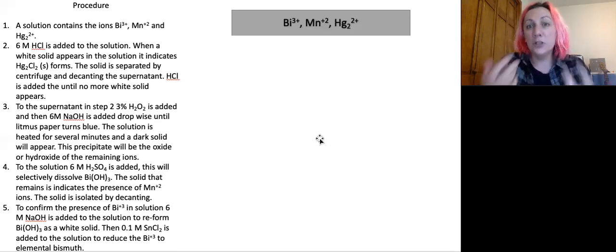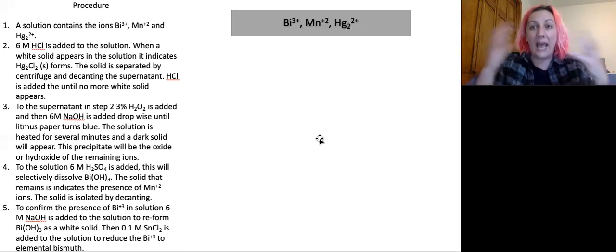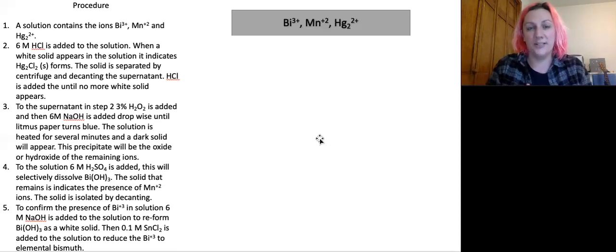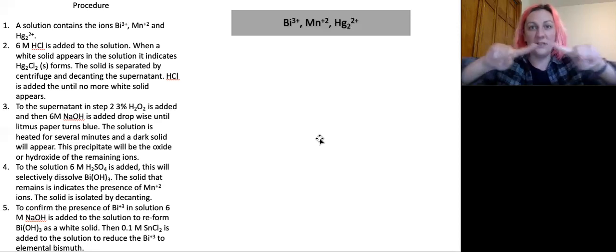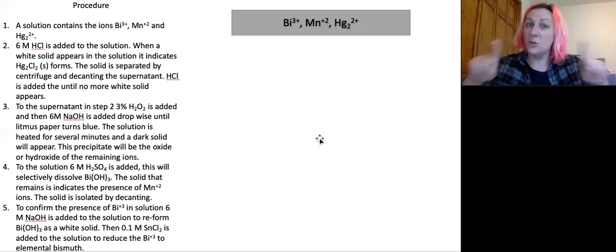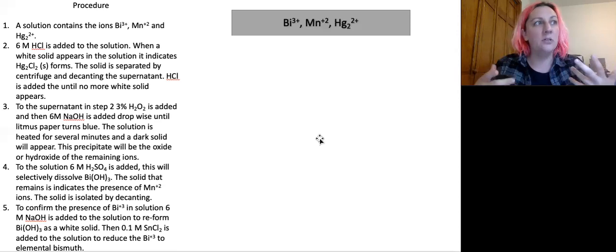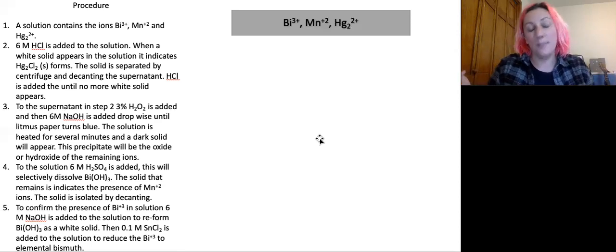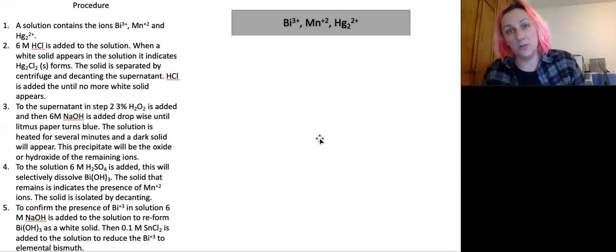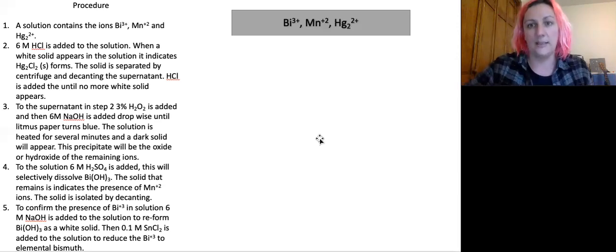So the first step of my flowchart will try to capture this procedural step. And I don't need to add all of the details. I don't need to talk about centrifuging and decanting. By creating the flowchart, I'm going to show that these two were separated, and we'll assume that they were separated in the best possible way, either by filtering or centrifuging and decanting, something like that.